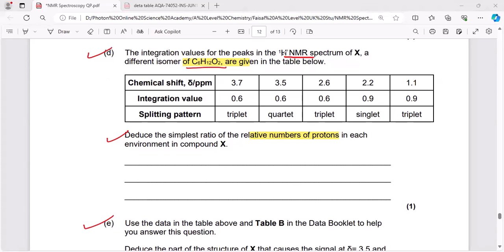The integration values for the peaks in the proton NMR spectrum of X, a different isomer, are given in the table below. Chemical shift data is given here, integration value is given here, splitting pattern is given here. Deduce the simplest ratio of the relative number of protons in each environment in compound X.